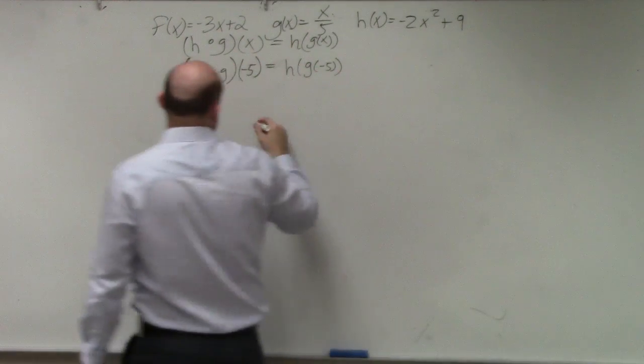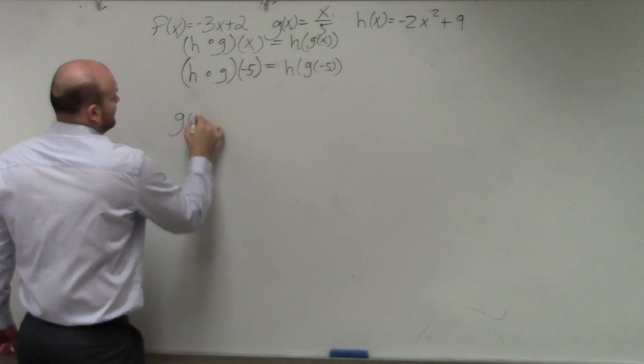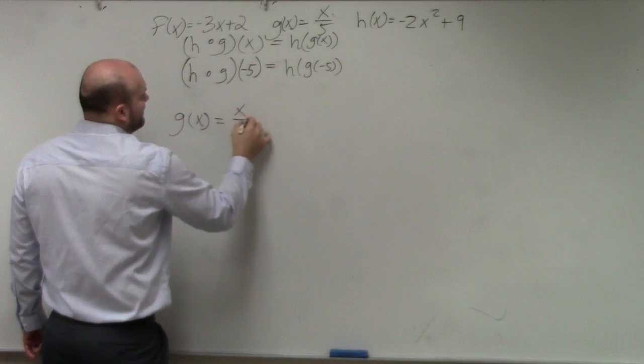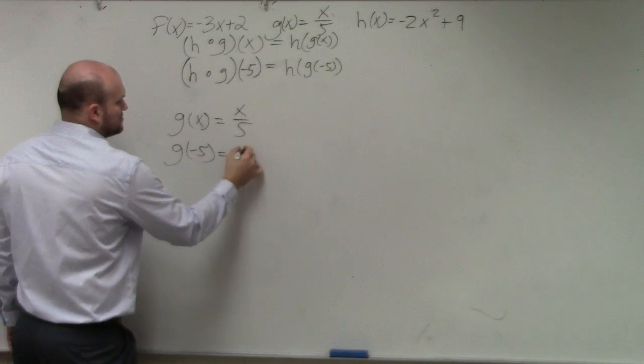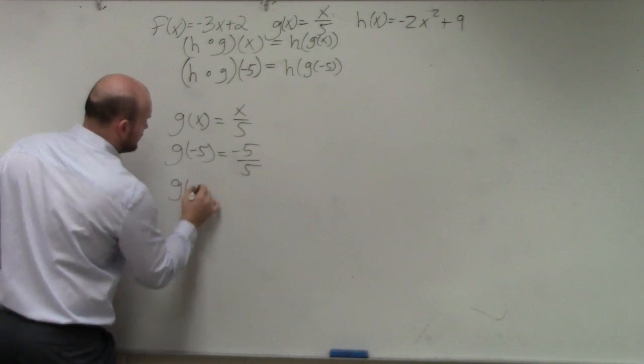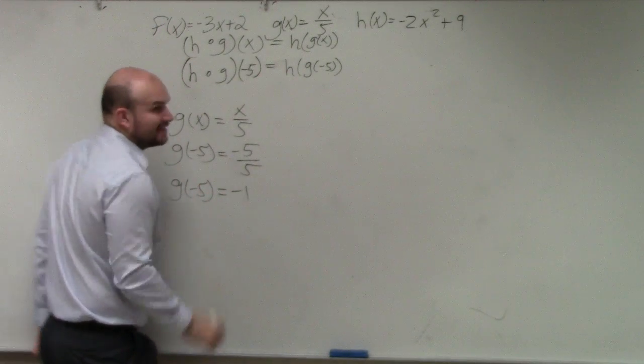So if I say g of x is x over 5, can I figure out what g of negative 5 is? Yes. Negative 5 over 5. So therefore, g of negative 5 is equal to negative 1.